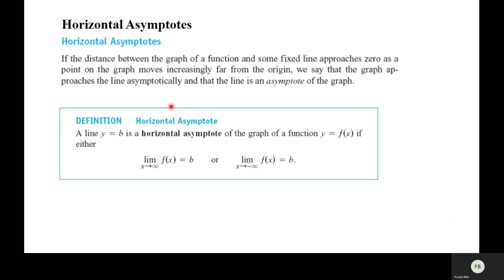Now, horizontal asymptotes. Vertical asymptotes occur when you approach a point and your function increases or decreases without any bound — that is, x approaches a and the function goes to infinity, so x = a is a vertical asymptote. A line y = b is a horizontal asymptote of the graph of y = f(x) if either the limit as x approaches infinity of f(x) equals b, or the limit as x approaches negative infinity of f(x) equals b.